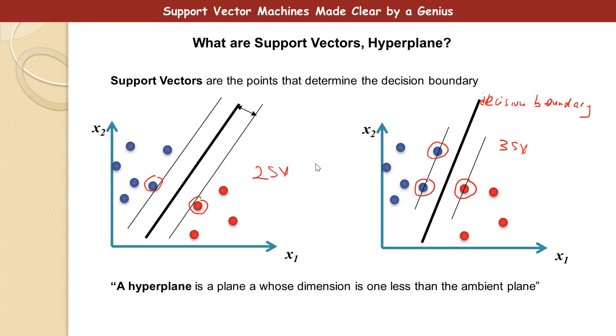A hyperplane is a plane whose dimension is 1 less than the ambient plane. So if you have data set in 2-dimensional plane, like we have here, it means that the hyperplane here is just 1-dimensional plane.